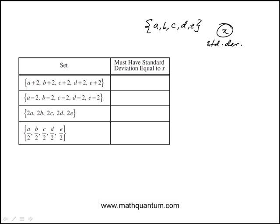The question is, for each of the following sets indicate which sets must have a standard deviation equal to X, meaning which of these operations do not change the standard deviation.